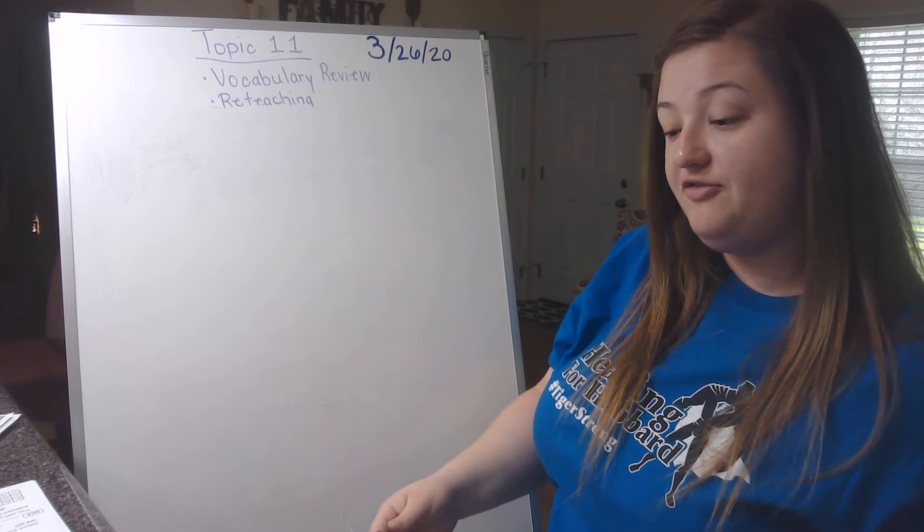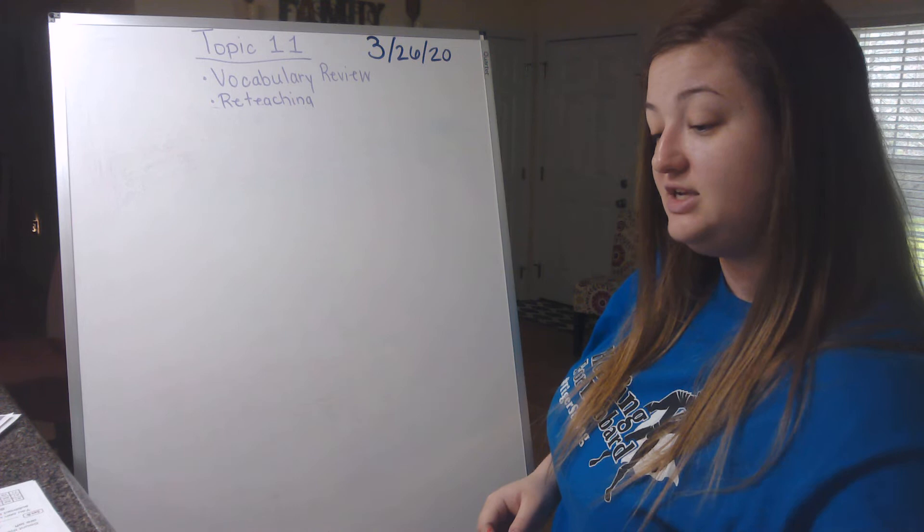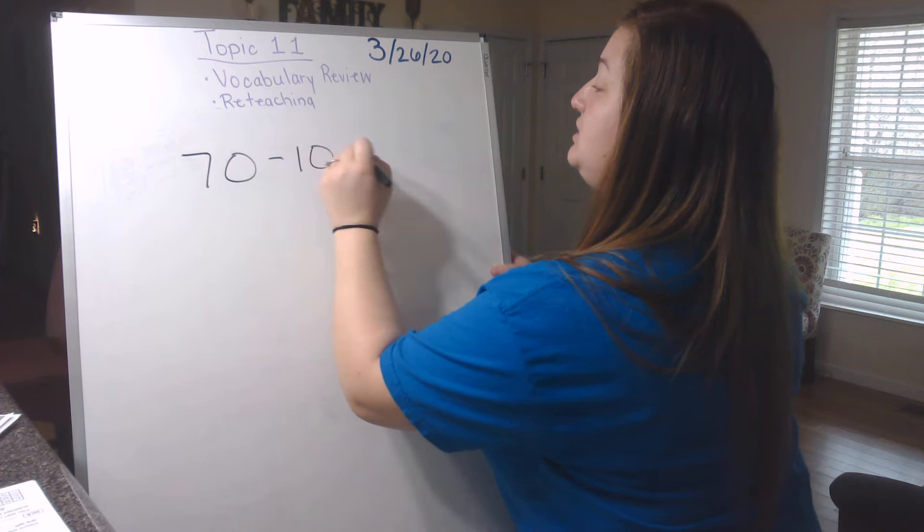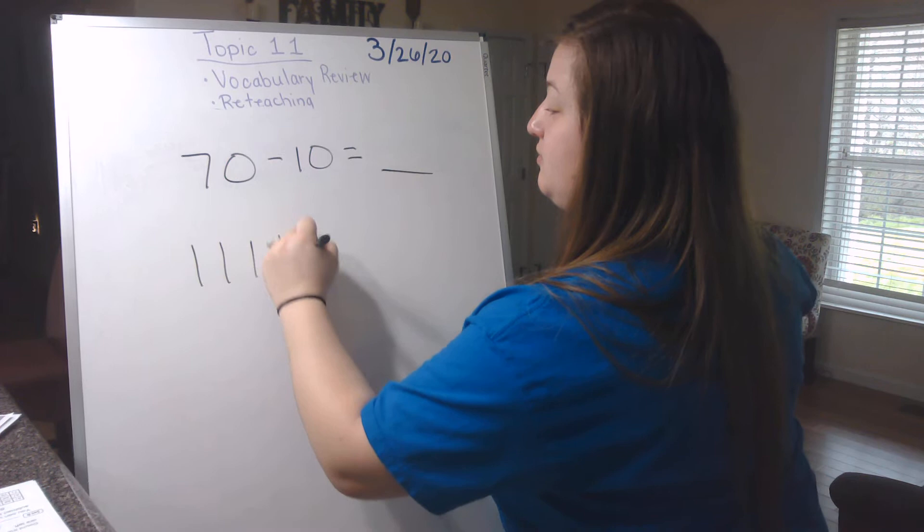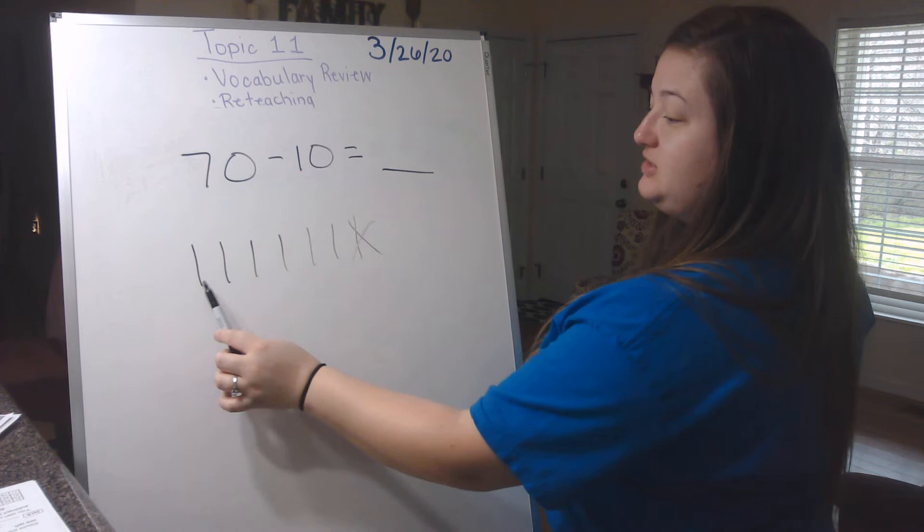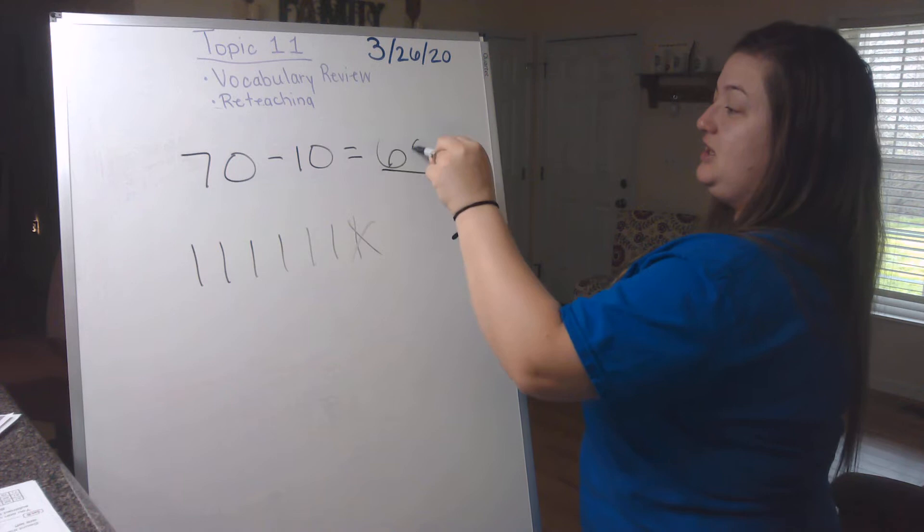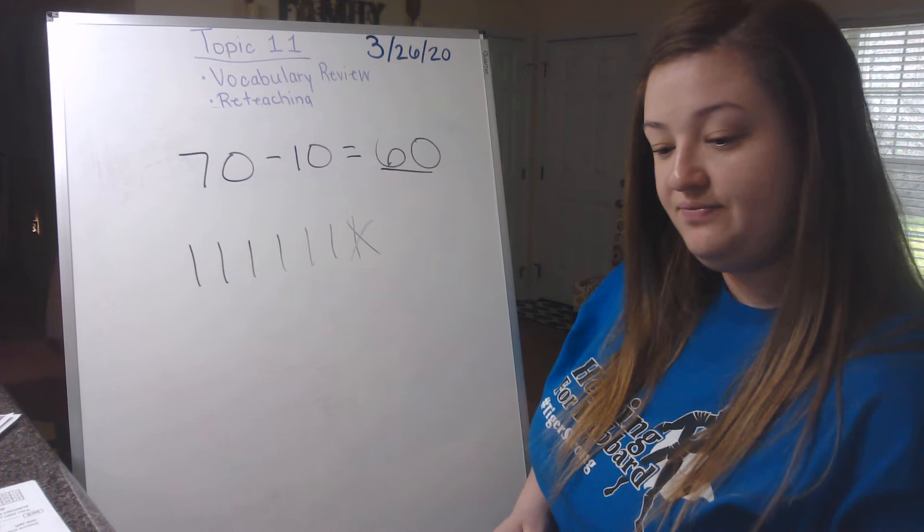Number five. Use mental math to solve 70 subtract 10. So 70 subtract 10. So I can think about it as, there's my 70. If I take one of these away, I'm going to be left with 10, 20, 30, 40, 50, 60. So 70 subtract 10 is 60. So think about place value blocks in your head, okay?